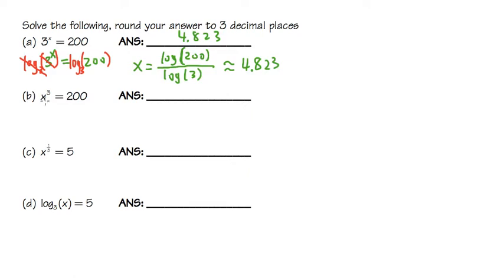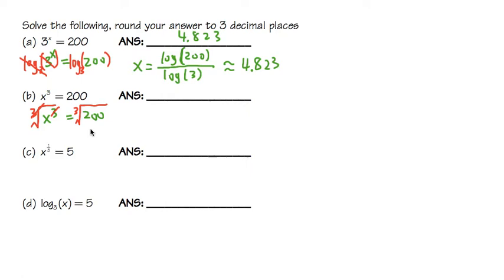For the second one, we have x to the third power equal to 200. This time the x is in the base. Since the power is 3, we take the cube root on both sides. The power and the cube root cancel each other out. And we don't need to put a plus or minus — that's only for square roots. So x is equal to the cube root of 200, which gives us 5.848.